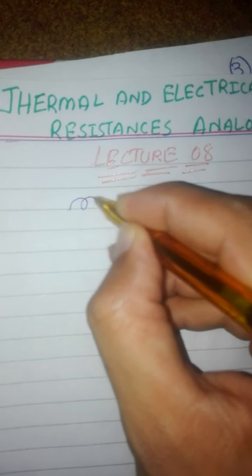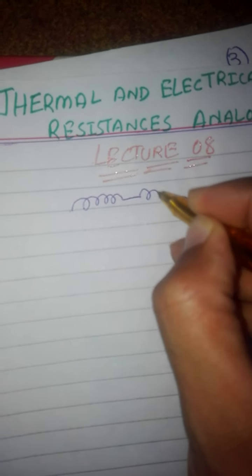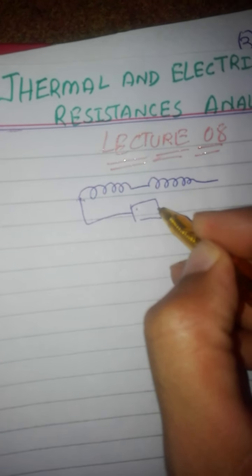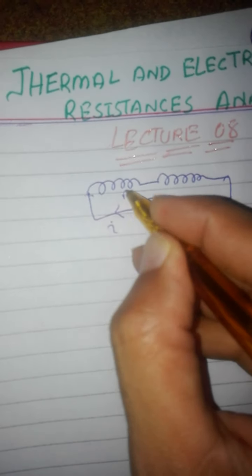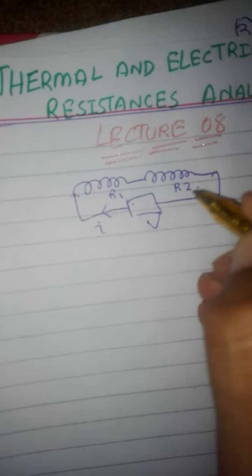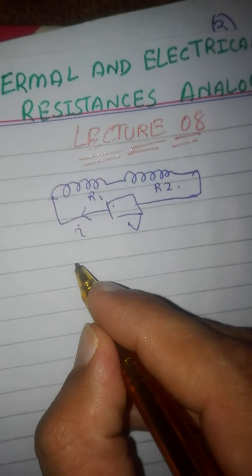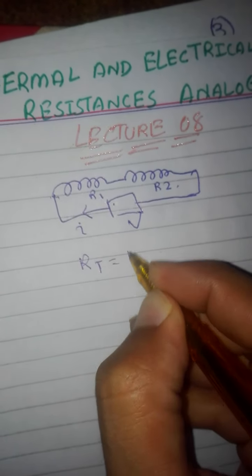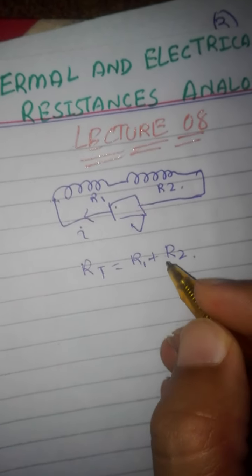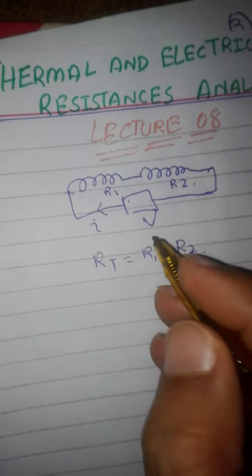As we know in electrical resistance, when two electrical resistors are connected in series, the total resistance of the resistors will be equal to the sum of the individual resistances. Suppose these two resistors are connected in series with a voltage and a current flowing through them — this is resistor one and this is resistor two. The total resistance when these two resistors are connected in series is resistance one plus resistance two.